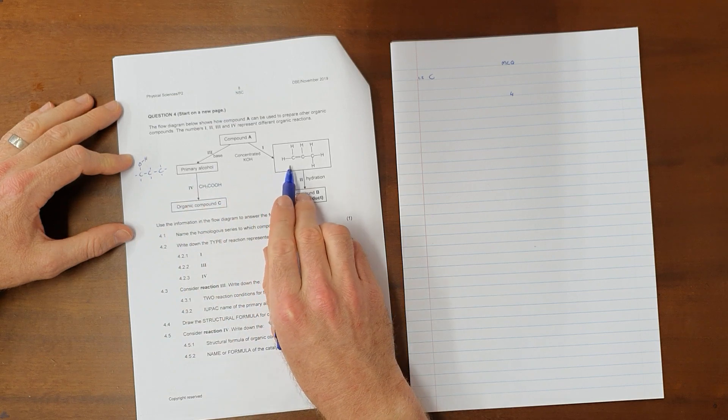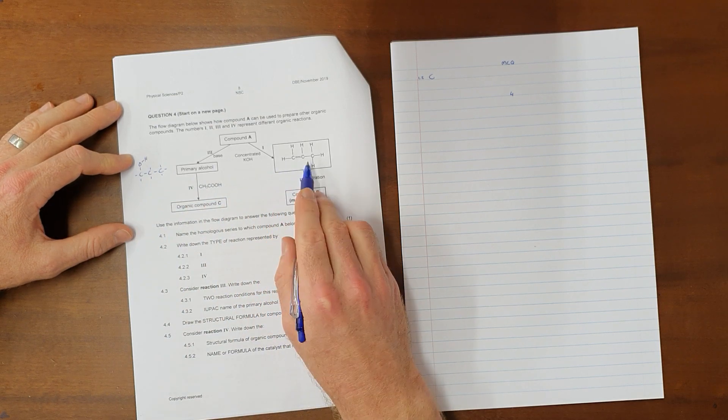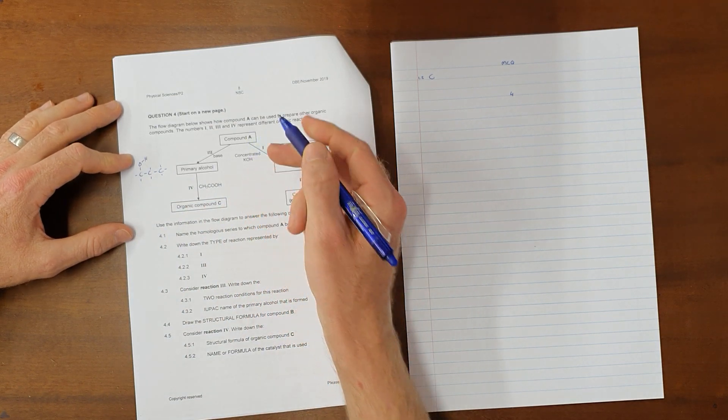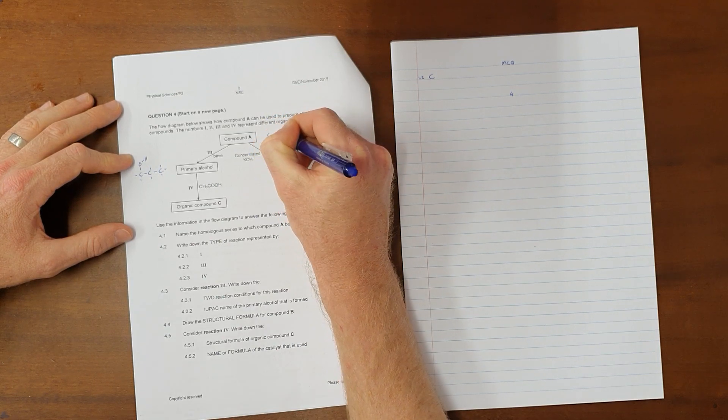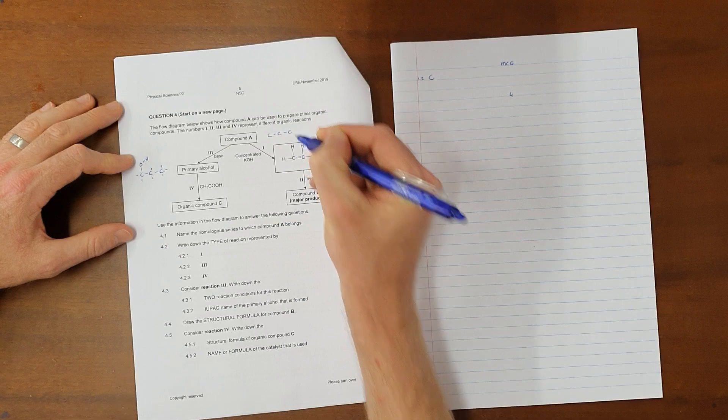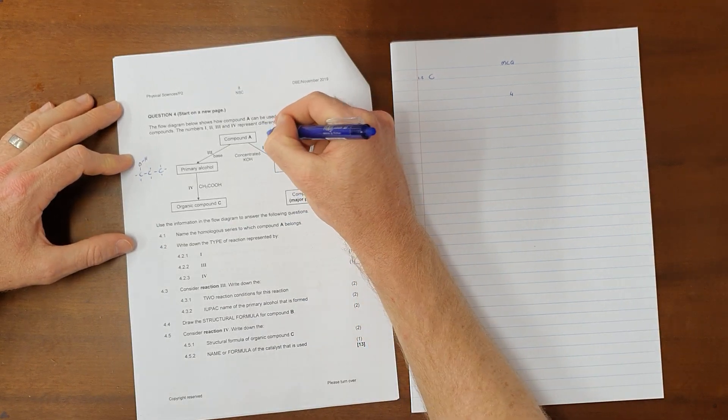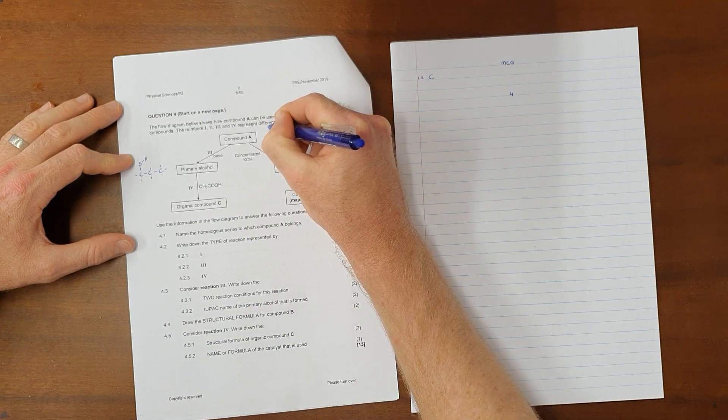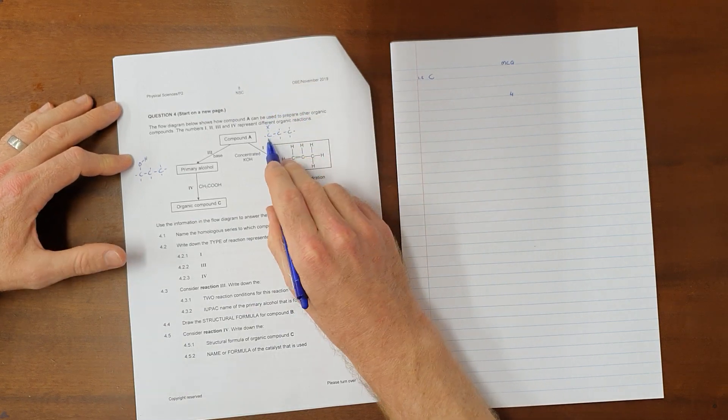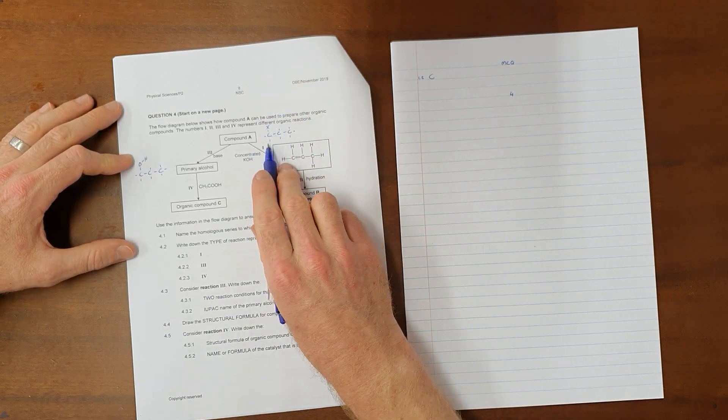We can then also see that the only way that you could go from some compound to a primary alcohol and also to an alkene is if we start out with a haloalkane, also known as an alkyl halide. Now it is not entirely clear which carbon the halogen group is on. I am going to, for the sake of this, assume that it is on the first carbon, although that is not entirely necessary.